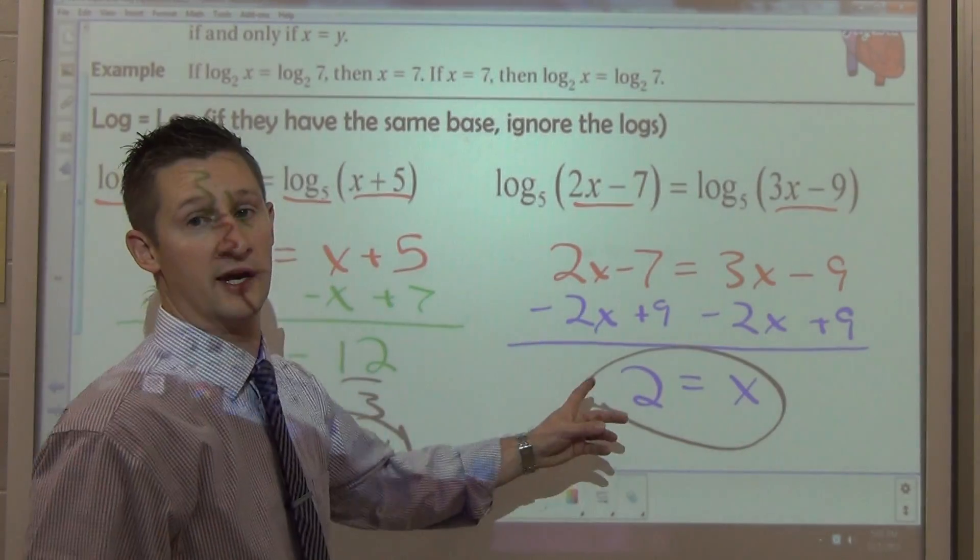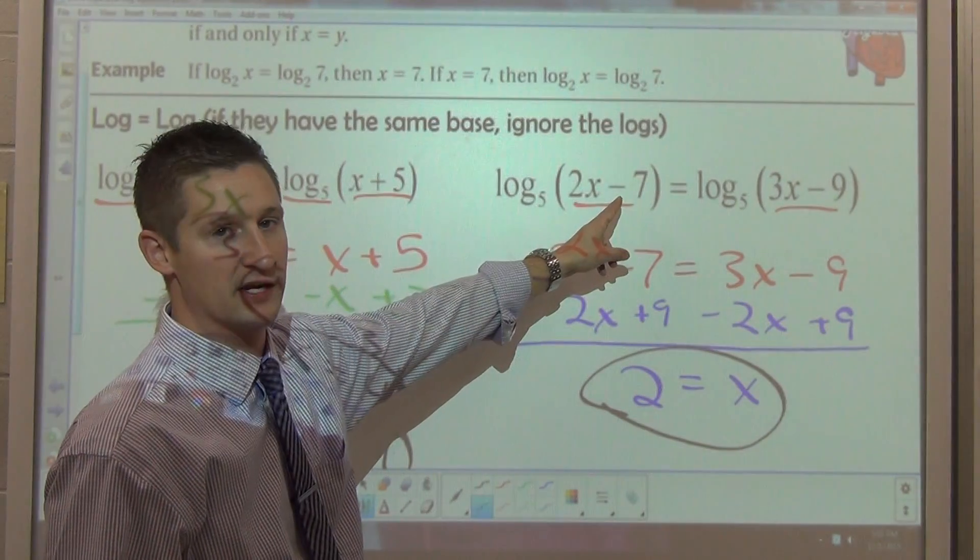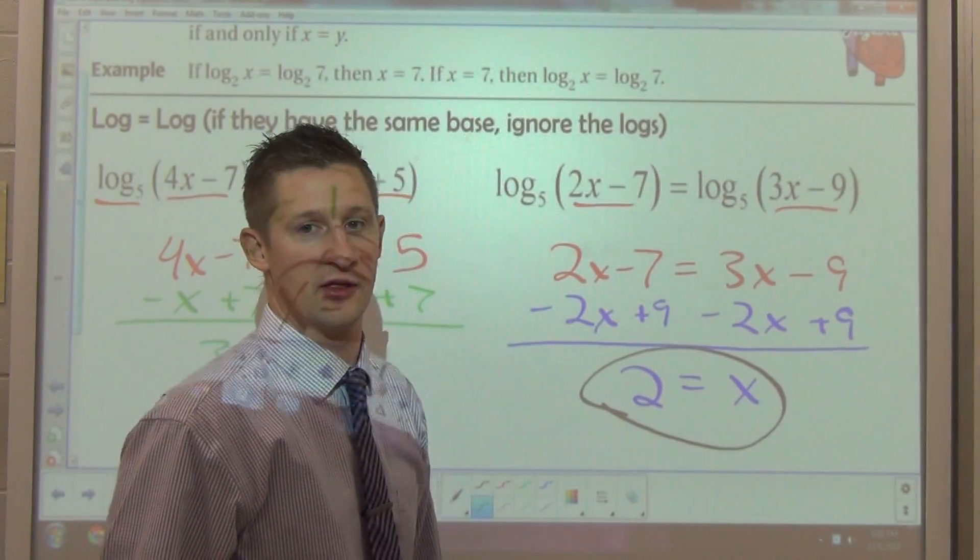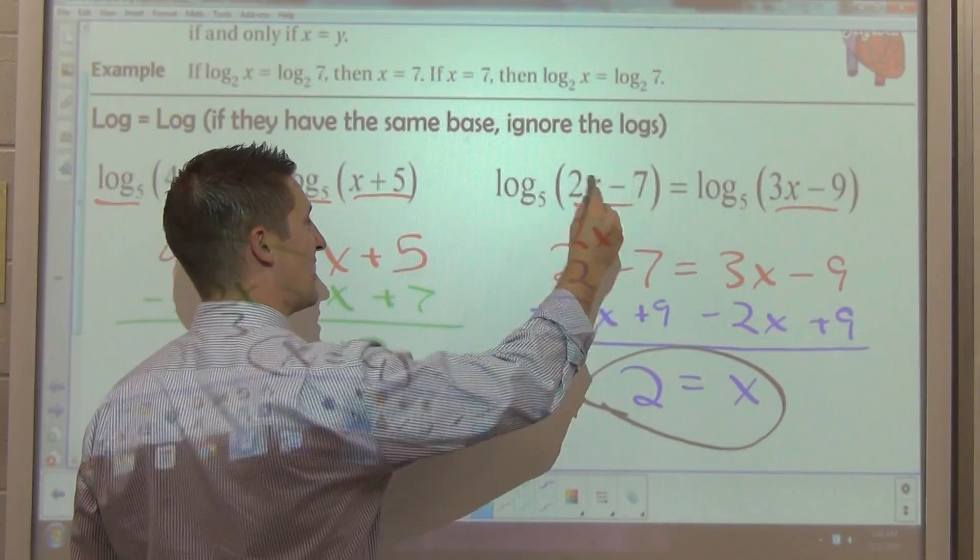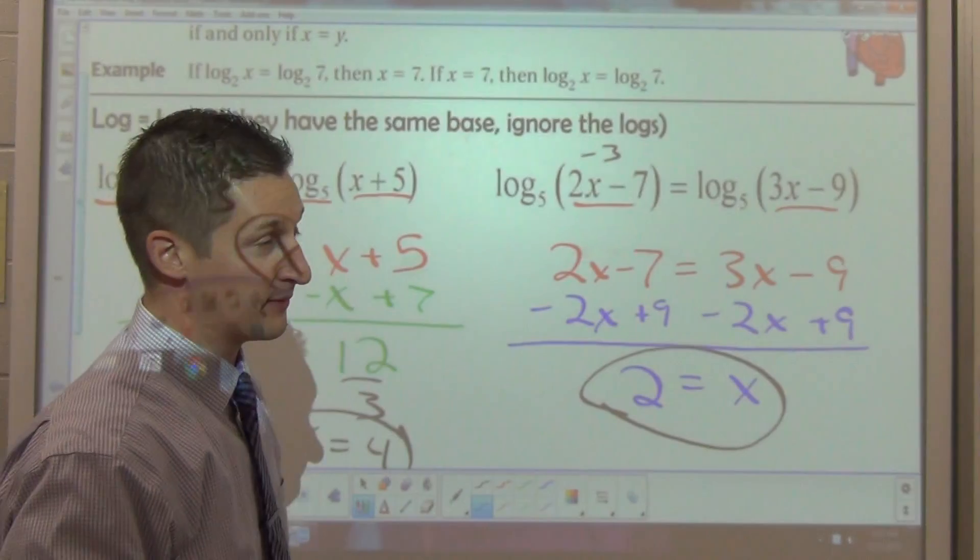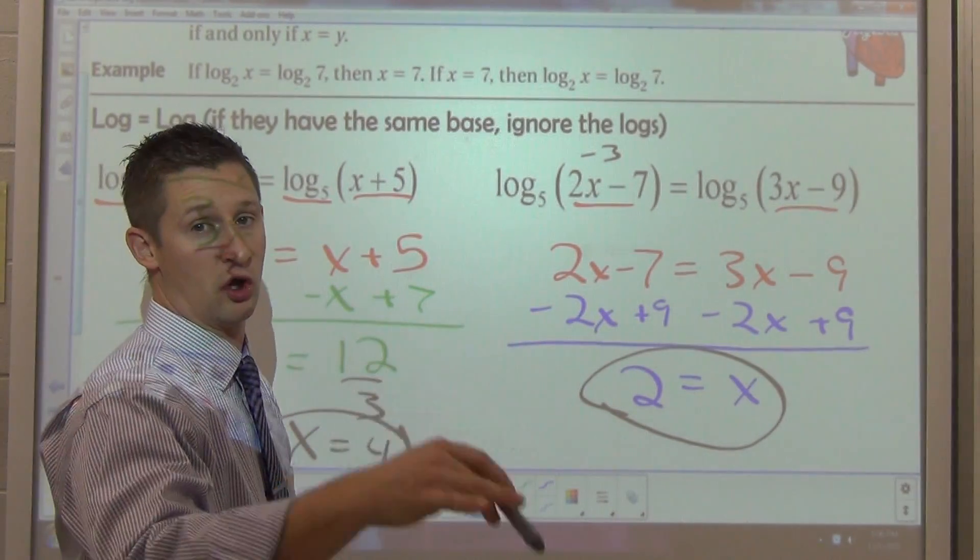Now, here's the problem. Plug it in and check it out. 2 times 2 is 4, minus 7 is negative 3. And here, 2 times 3 is 6 minus 9 is also negative 3. Now the problem is, the log base 5 of negative 3 is not something that we can do. We can't take the logarithm of a negative number.